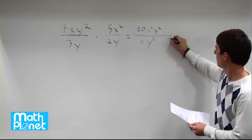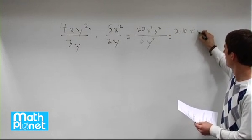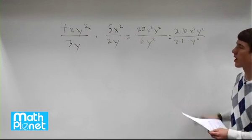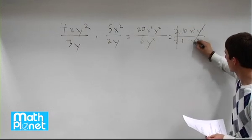So let's write that as 2 times 10 times x to the power of 3 times y squared over 2 times 3 times y squared. So now we can start to cancel things. These 2's cancel each other and these y squareds cancel each other exactly.